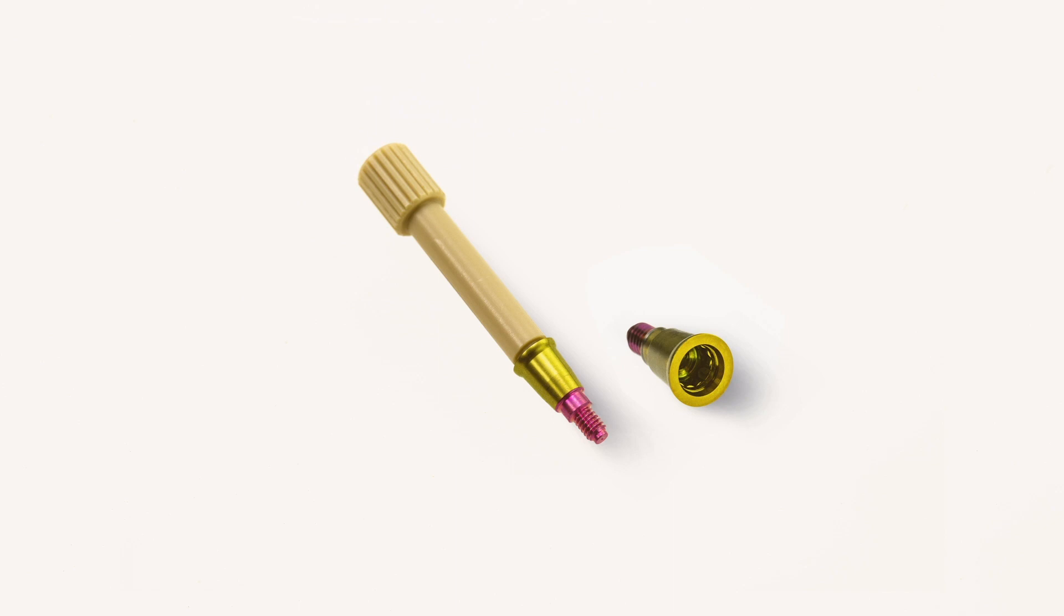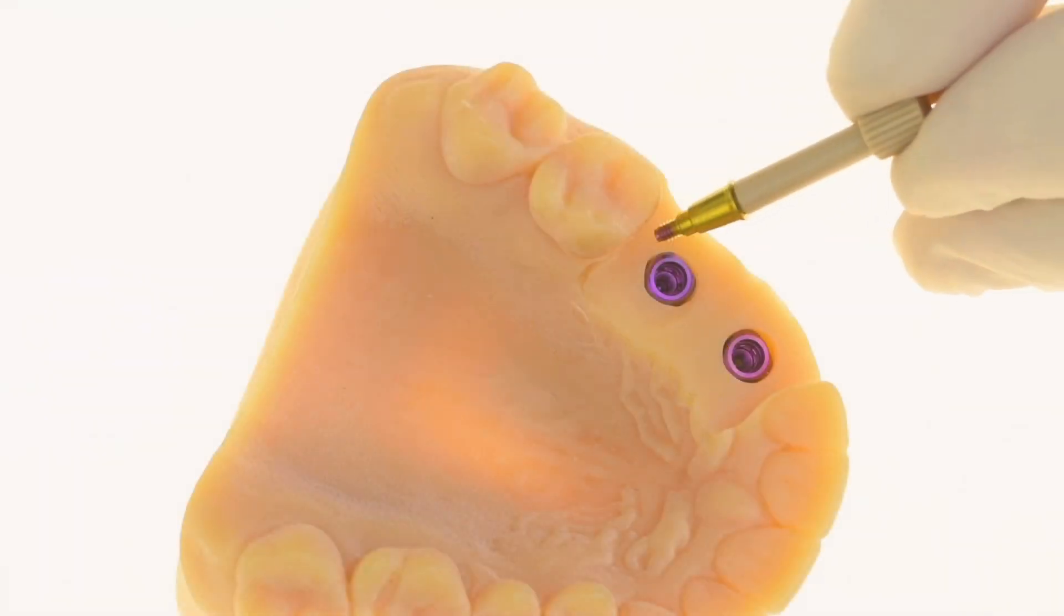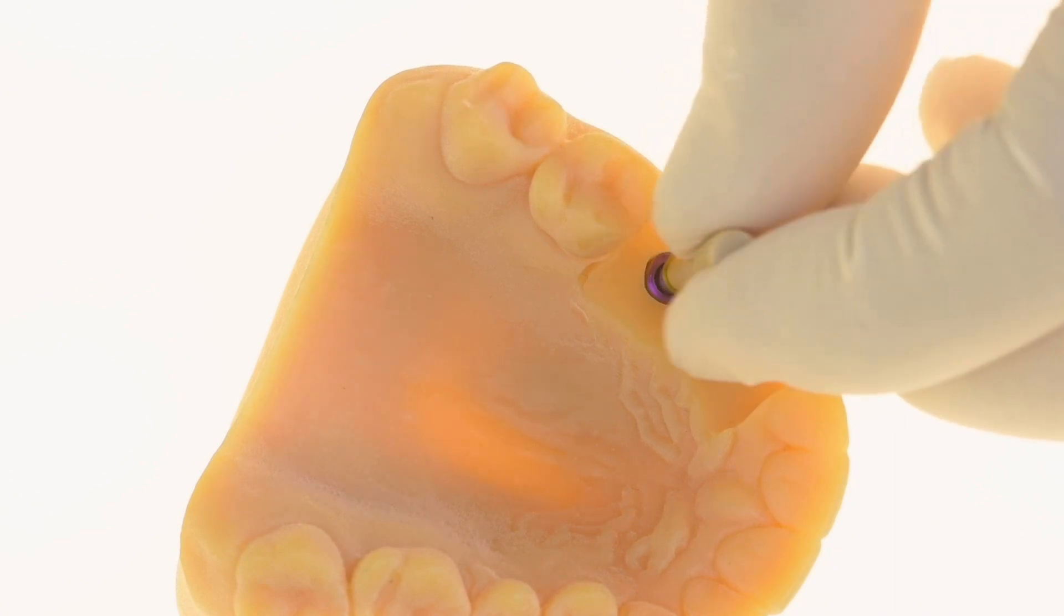The MIS Connect abutment system is a one-time solution which enables avoiding interference of the peri-implant gingival seal. We start by screwing in the Connect abutment to the implant using the plastic gripping tool and remove the tool with a slight side-to-side bending motion.